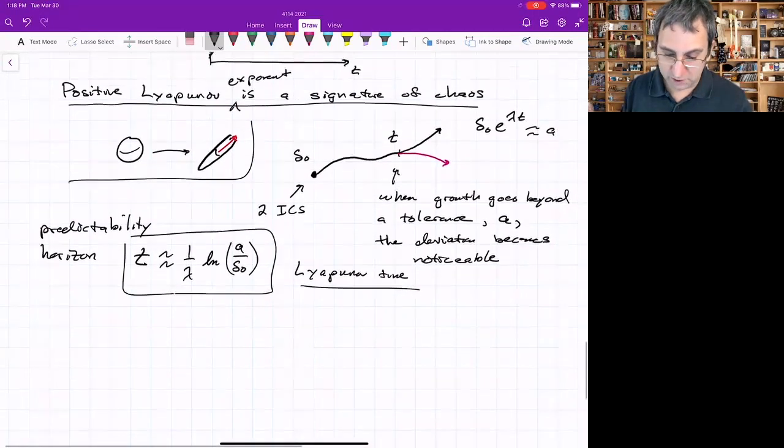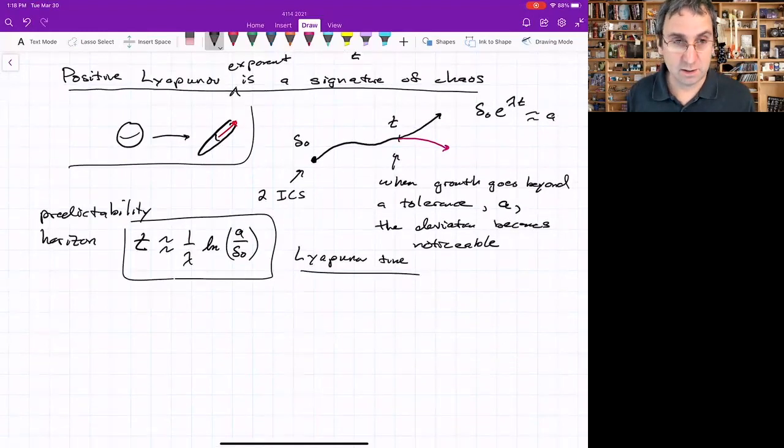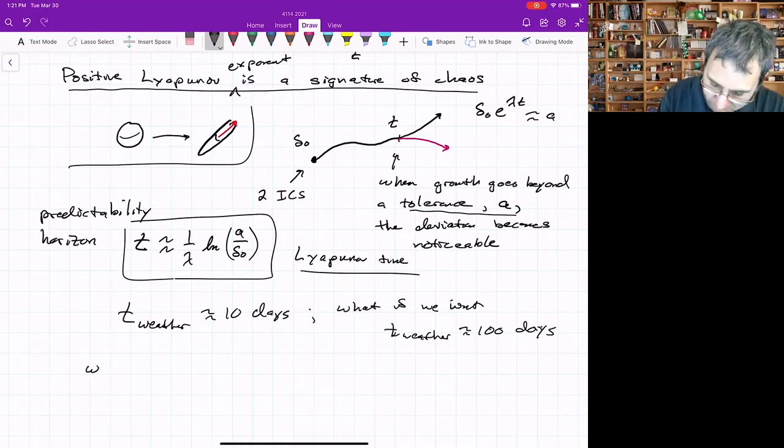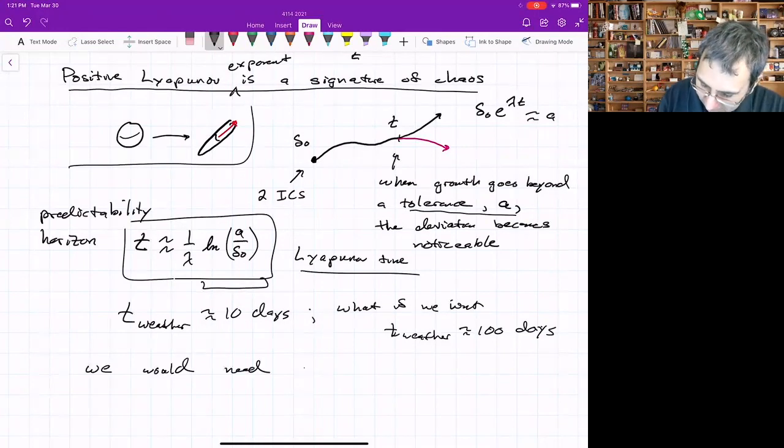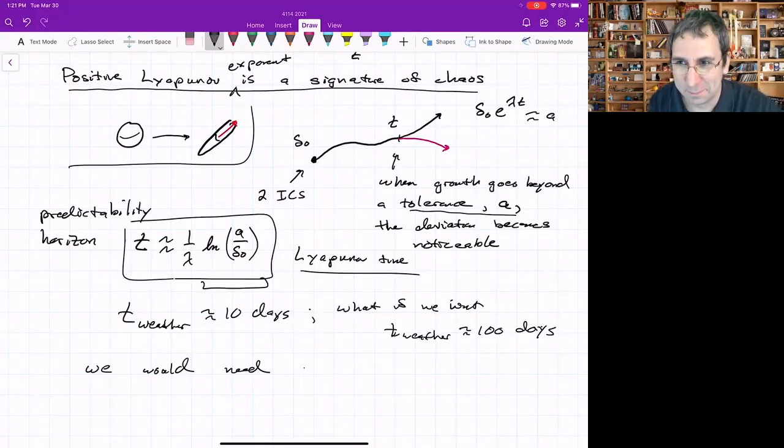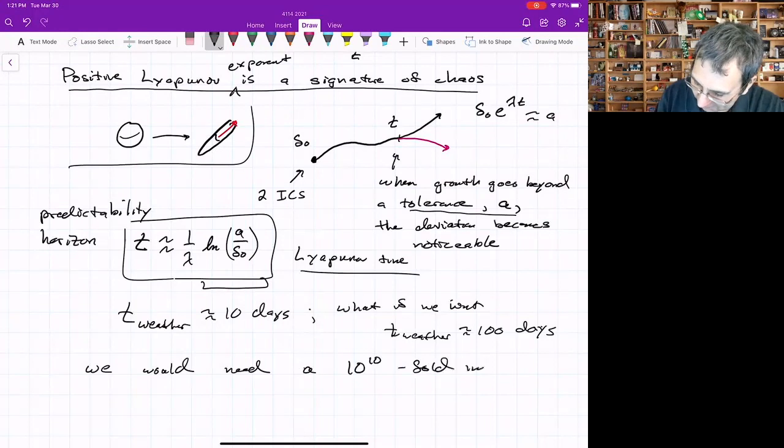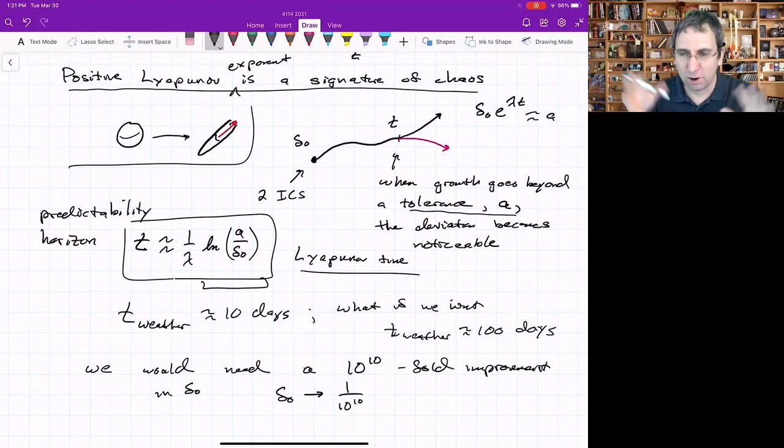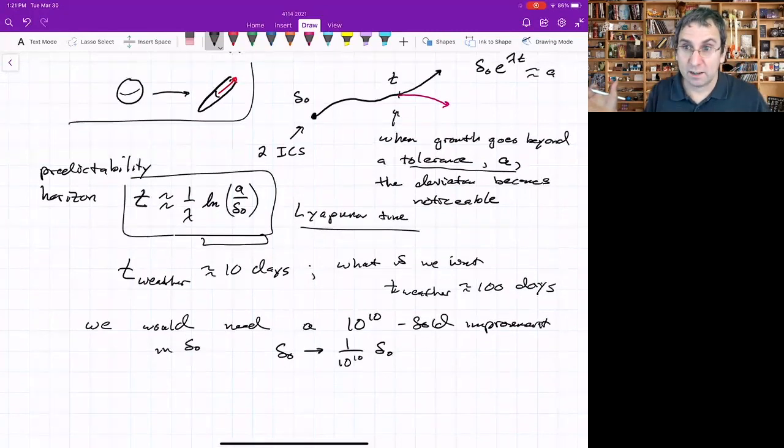Like, let's say we could predict the weather to 10 days. If we wanted to have like a 10-fold improvement in the prediction horizon, we want to predict the weather up to 100 days reliably. A stays the same. Because of this natural log, we would need not a 10-fold improvement in delta naught, but a 10 to the 10-fold improvement in delta naught. Meaning some separation in phase space, we would need that to go down by a factor of 10 to the 10. I know this is natural log, but treat it as log base 10. It's going to be about the same.